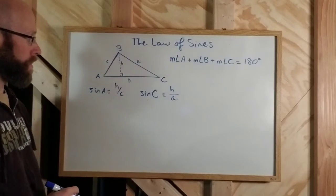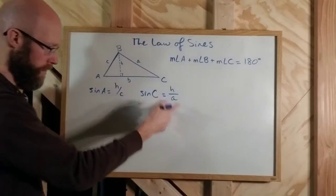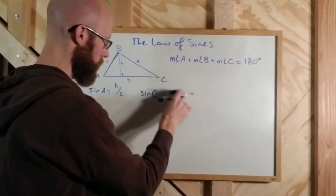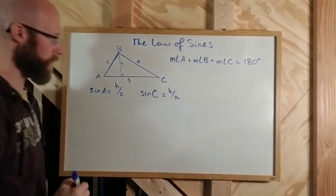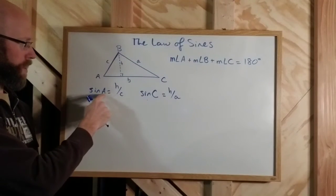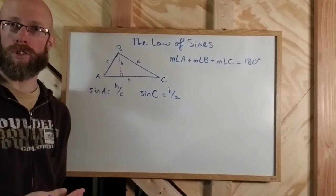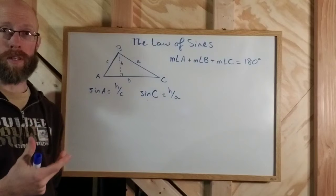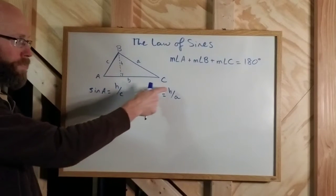So now, it's funny I did that on an angle and that one not on an angle. Let's make that consistent. H over A. Alright, good enough. Now, in each of these equations, there's a common H. Right? H shows up on both of them. It's the only thing that shows up in both of them. So we're going to solve them for H.